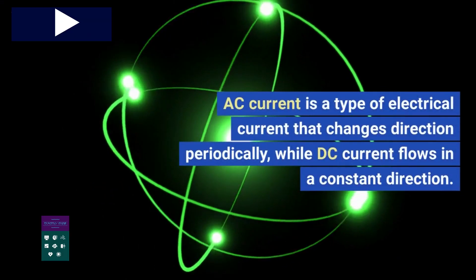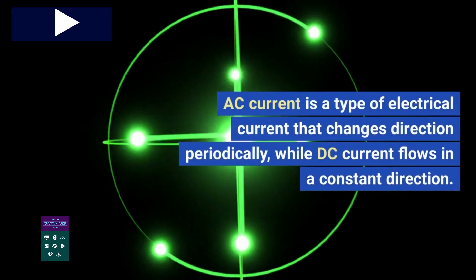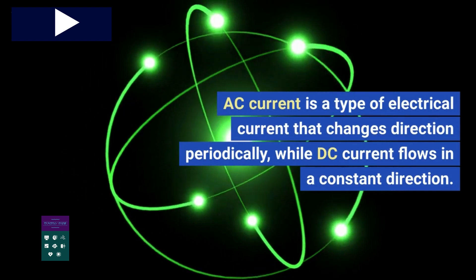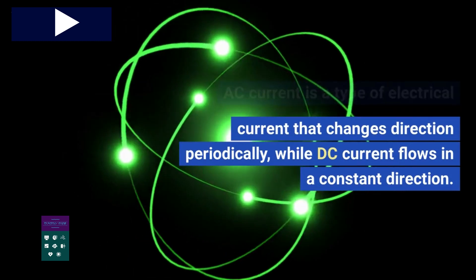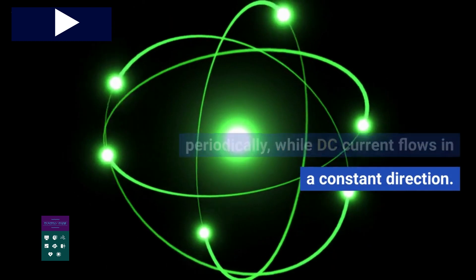AC current is a type of electrical current that changes direction periodically, while DC current flows in a constant direction.